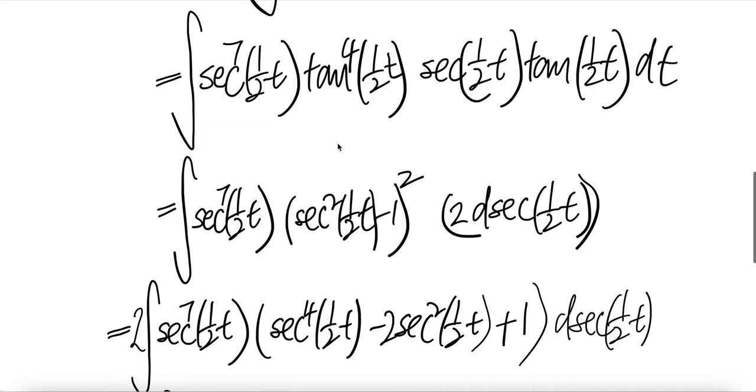Now write this as tangent square half t to the power two. Tangent square half t is sec square half t minus one, whole thing squared. Then this piece, push it into here. The derivative of sec half t is sec half t tangent half t times the derivative of this, which is half, but there's no half when you multiply, so this is the same thing as that.